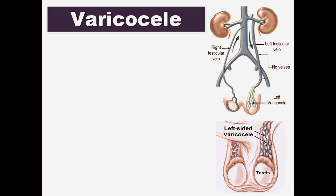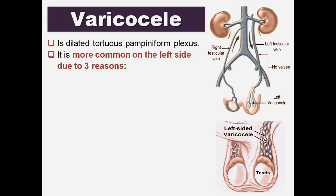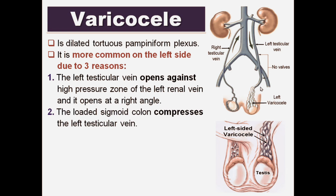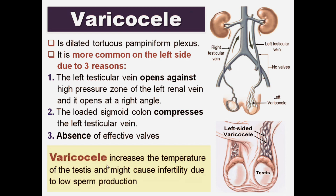Regarding varicocele: varicocele is a dilated tortuous pampiniform plexus of veins. It is more common on the left side due to three reasons. The first reason is that the left testicular vein opens against the high pressure zone of the left renal vein, and it opens at a right angle which allows reflux from the left renal vein. The second reason is that the loaded sigmoid colon compresses the left testicular vein. The third reason is the absence of valves in the left testicular vein.